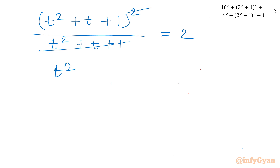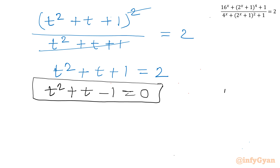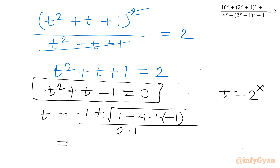Now we can cancel (t^2 + t + 1) from numerator and denominator, leaving t^2 + t + 1 = 2. Taking all terms to one side: t^2 + t - 1 = 0. This is our quadratic equation, where t = 2^x.